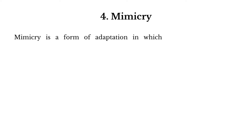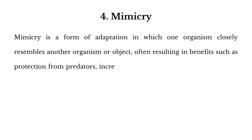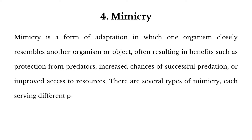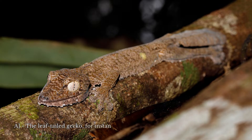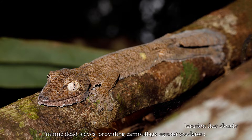4. Mimicry. Mimicry is a form of adaptation in which one organism closely resembles another organism or object, often resulting in benefits such as protection from predators, increased chances of successful predation, or improved access to resources. There are several types of mimicry, each serving different purposes. For example, a. The leaf-tailed gecko has a body shape and coloration that closely mimic dead leaves, providing camouflage against predators.